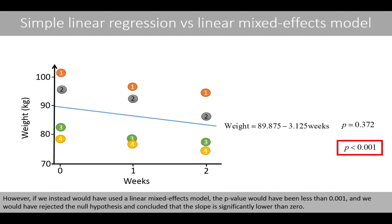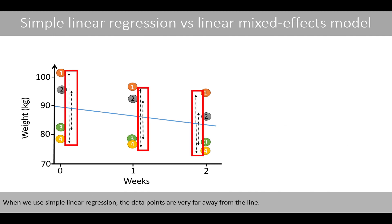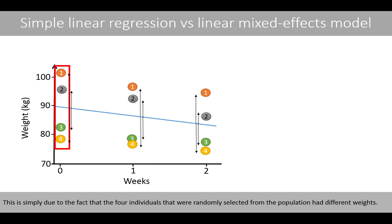However, if we instead would have used a linear mixed effects model, the p-value would have been less than 0.001 and we would have rejected the null hypothesis and concluded that the slope is significantly lower than zero. So how can there be such a big difference in the p-values between the simple linear regression model and the linear mixed effects model? When we use simple linear regression, the data points are very far away from the line. This is simply due to the fact that the four individuals randomly selected from the population had different weights.